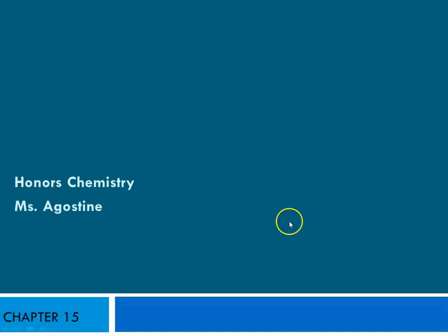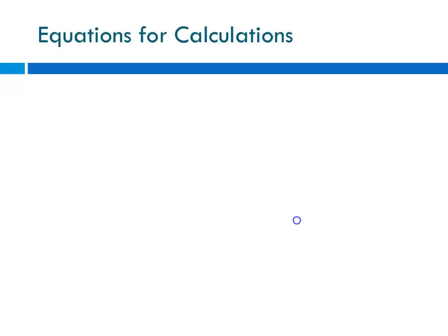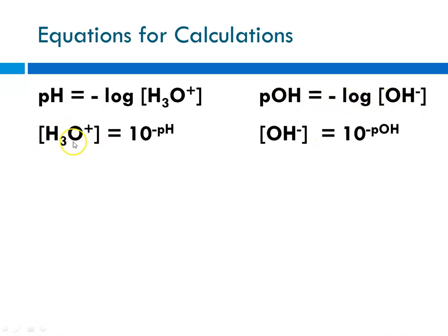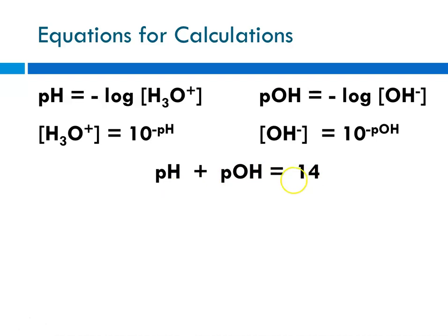Today we are continuing with Chapter 15 calculations, specifically titration calculations. The equations we've covered include pH, defined as minus the log of the hydronium ion concentration. pOH is minus the log of the hydroxide ion. The concentration of hydronium ion is 10 to the minus pH, and hydroxide is 10 to the minus pOH. pH plus pOH must equal 14 because of the dissociation constant of water.